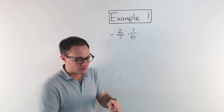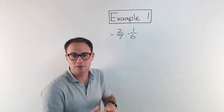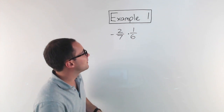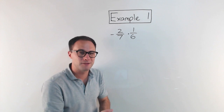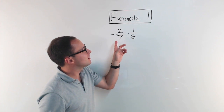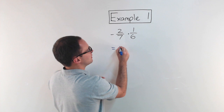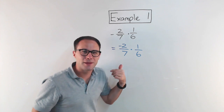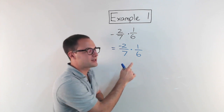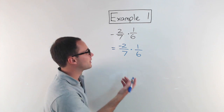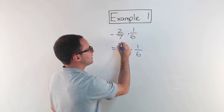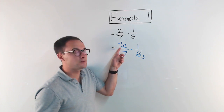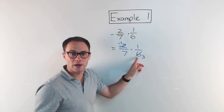The same rules apply: negative times negative is positive, and negative times positive is negative. Same signs give you a positive; different signs give you a negative. When multiplying fractions, we always try to simplify first. Thinking of this as negative two over seven times one-sixth, negative two and six have a common factor of two. So that becomes negative one over seven, and six becomes three.